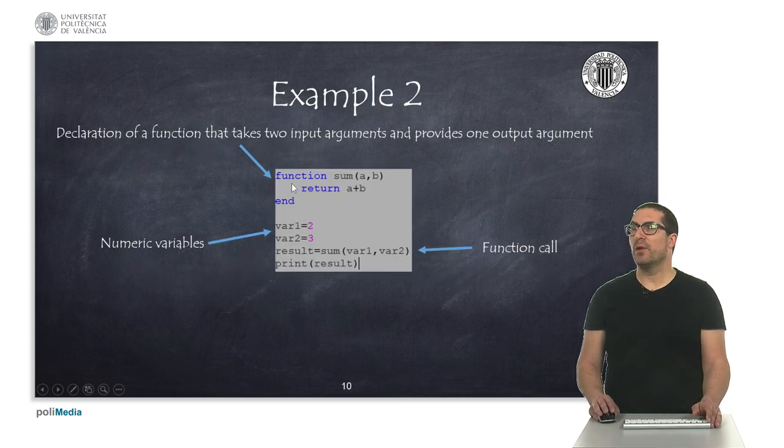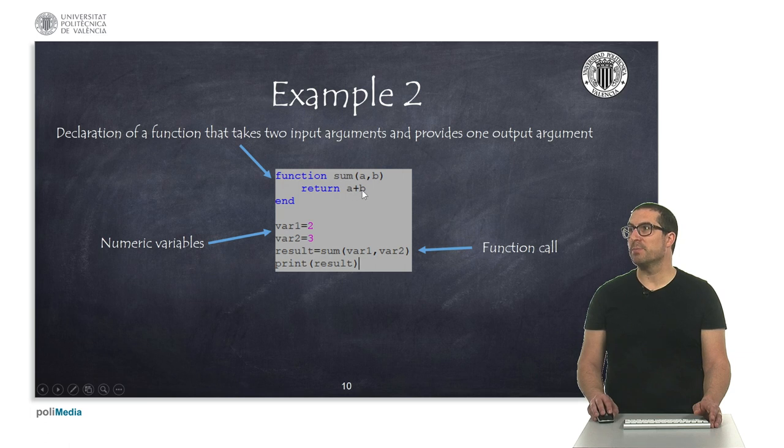Okay, in this second example, I'm declaring a function which is called sum. This function has two input arguments, a and b, and I'm returning actually the sum of them, so it's a plus b, and this is where the function is being declared. And then, in the rest of the code, I'm declaring two numeric variables, var one, var two, and then I'm calling the function using the parentheses with the same number of arguments that this function requires, and I'm assigning the result of this sum to a new variable which is called result, and then I'm printing the result.